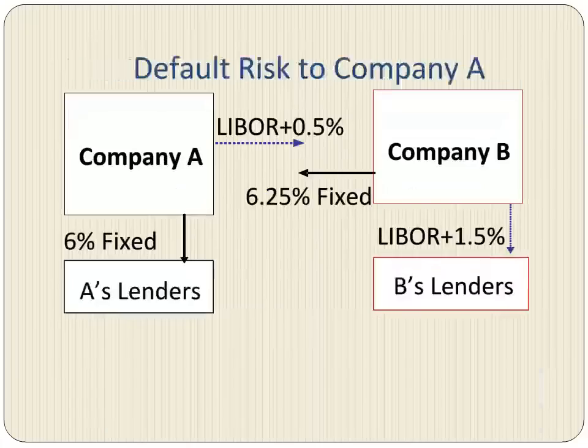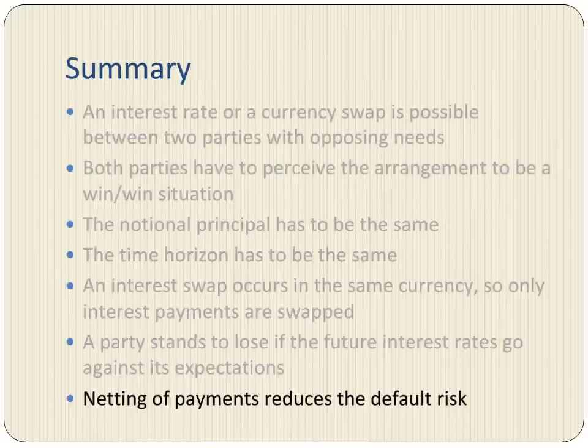The second issue is related to default risk. It would appear that Company A is taking a big risk since Company B, which has a lower credit rating, can default on its payments to Company A. However, in reality the payments by the two companies will be netted out. Let's assume that the LIBOR rate is 5%. On the million dollar notional amount, Company A would owe Company B an annual payment of $55,000, whereas Company B would owe Company A an annual payment of $62,500. The net result is that Company B makes a payment of $7,500 to Company A. If Company B defaults, it will be on the small amount of $7,500 and not the entire amount of $62,500, or the notional principal of $1 million.